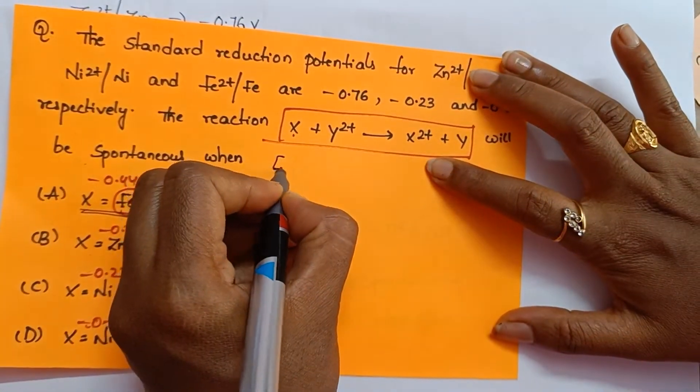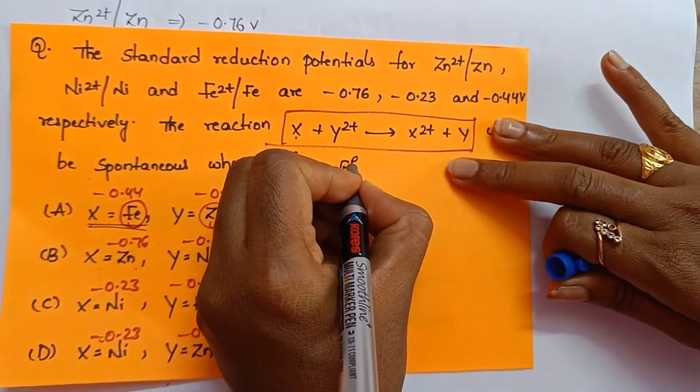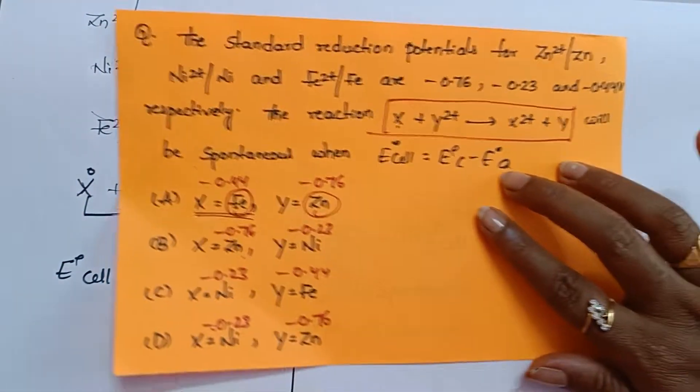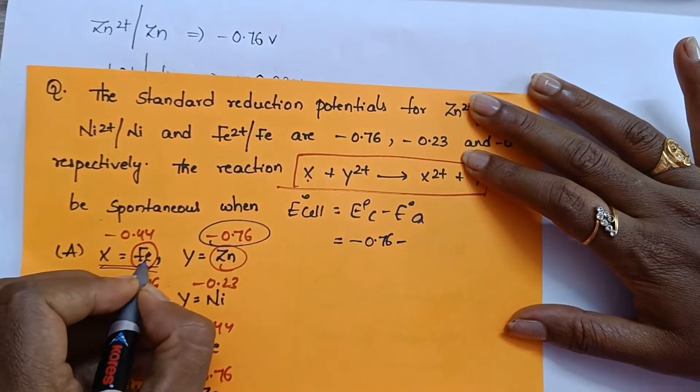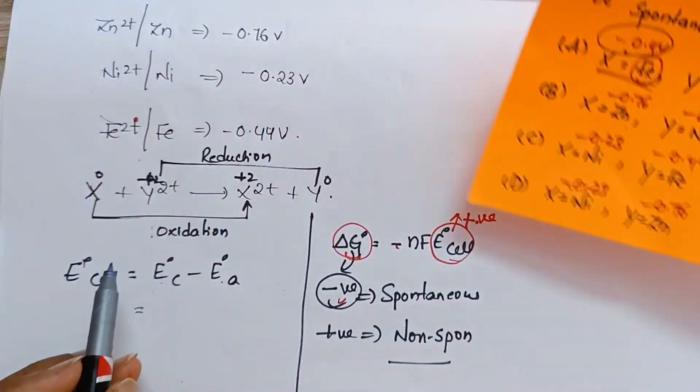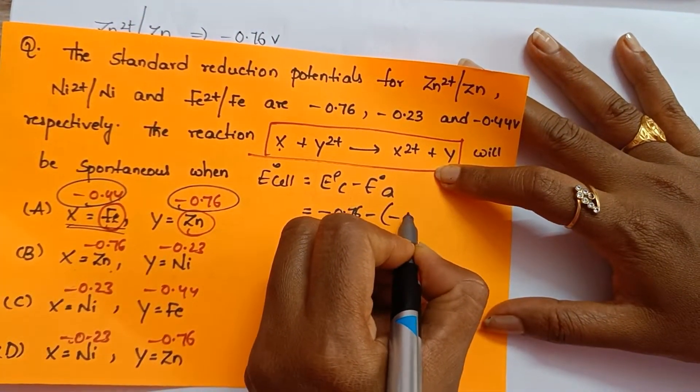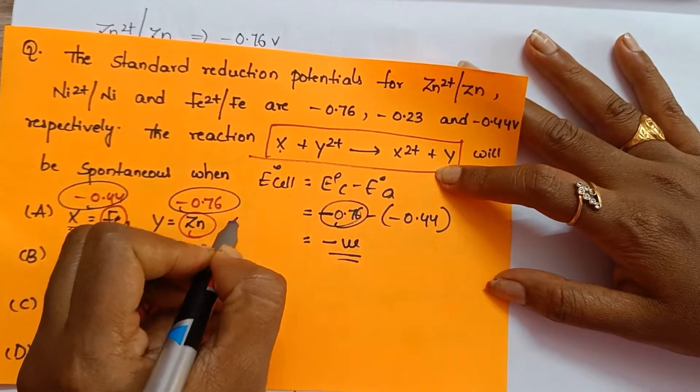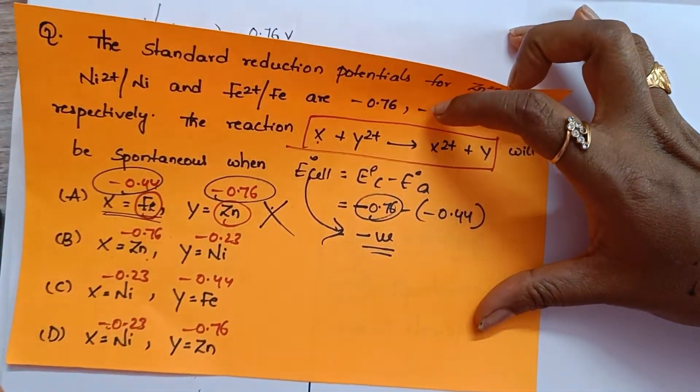And you just know the formula: E naught of cathode minus E naught of anode. Now how to do? Which is cathode? Y is cathode. This is cathode. Minus 0.76. Minus which is anode? This is anode. How I came to know? X is undergoing oxidation, anode. Y is undergoing reduction, so it is cathode. Then cathode value minus of minus 0.44. Obviously this is more value, you get negative. First option, E naught cell negative. If E naught cell negative means delta G positive. This is not the right option. Crystal clear?